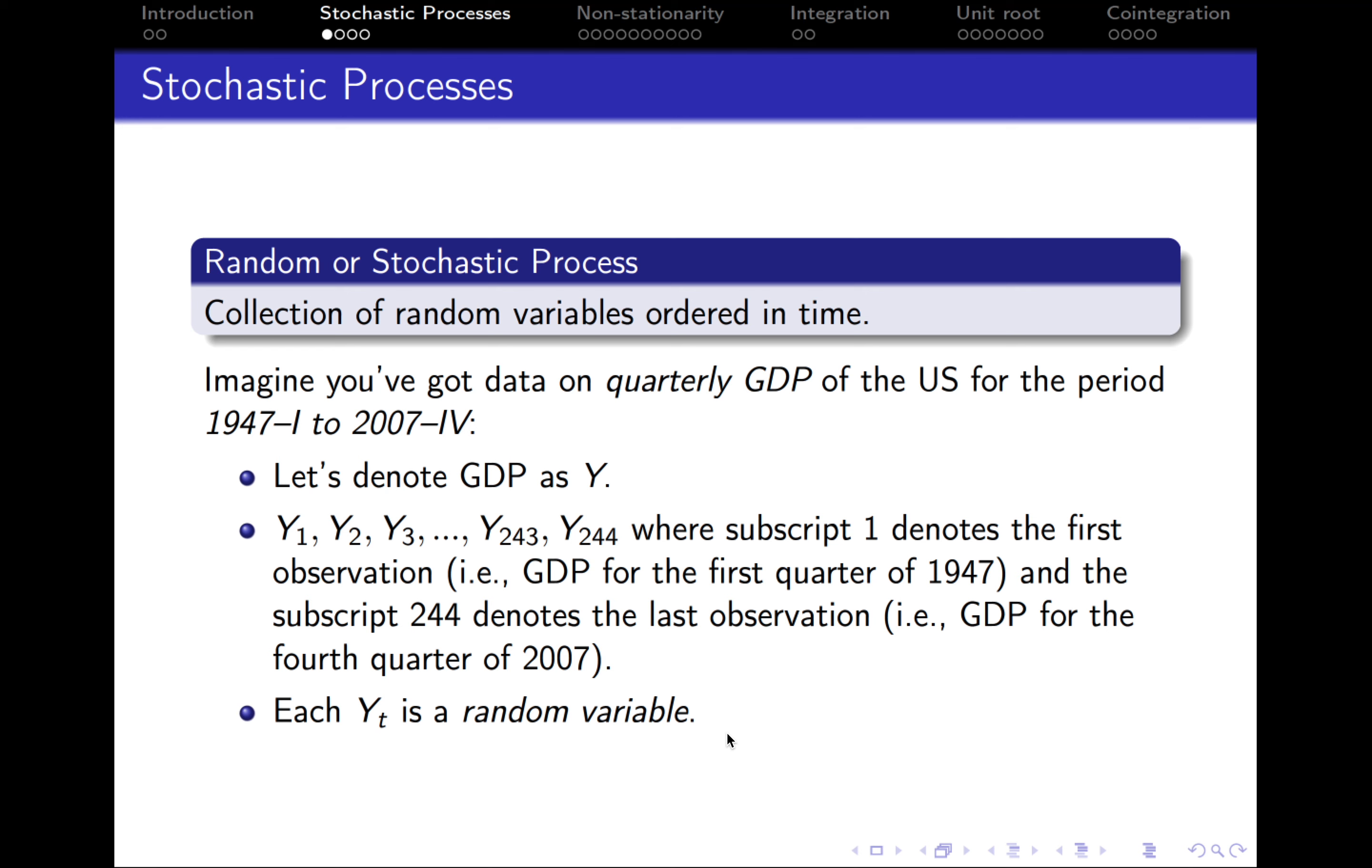So what is a stochastic process? A stochastic process or random process is a collection of random variables ordered in time. The best way to understand this concept is to have a look at an example.